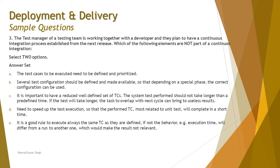Question 3: a test manager working with developers plans to establish a continuous integration process from the next release. Which of the following elements are NOT part of continuous integration? Be careful with the word 'not' — it completely changes what you are looking for. You must select two options. Option A: test cases to be executed need to be defined and prioritized — this is indeed an element of continuous integration, updated continuously with each integration. Option B: several test configurations should be defined and made available so the correct configuration can be used depending on the phase — configuration management plays a vital role in continuous integration.